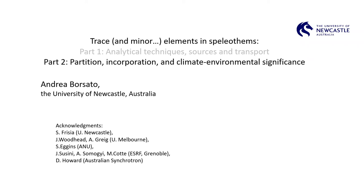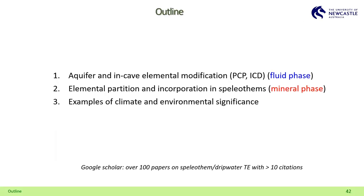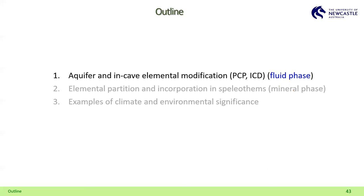I will present some examples of climate and environmental significance. Today, there are more than 100 papers dealing with speleothem or dripwater trace elements, so it's virtually impossible to make a comprehensive review. I will concentrate on the cases I studied and the most important reference cases. In this first part, we'll talk about what happened to the fluid phases when entering the aquifer and the cave, then about the partition coefficient and incorporation in speleothems, finishing with some environmental and climate examples.